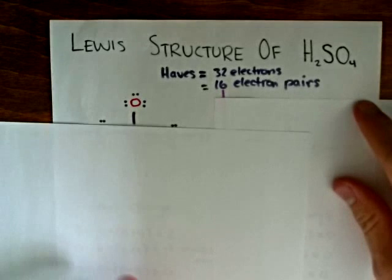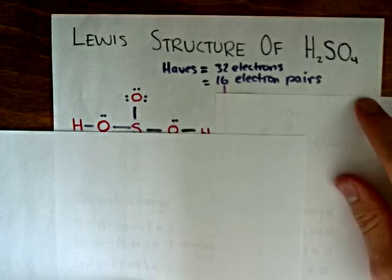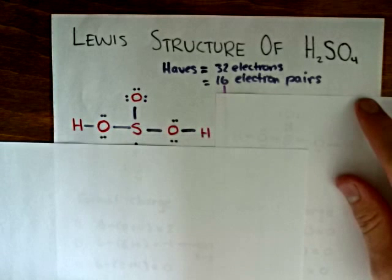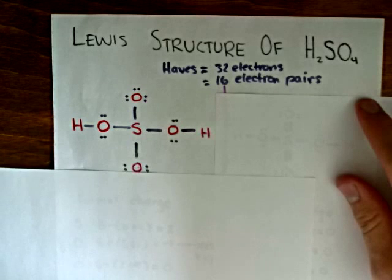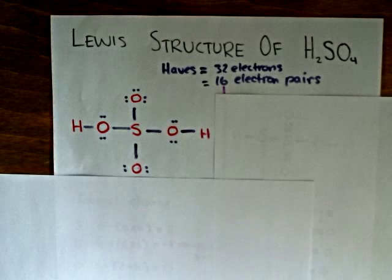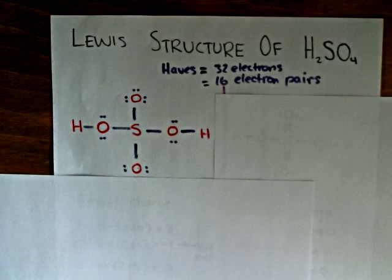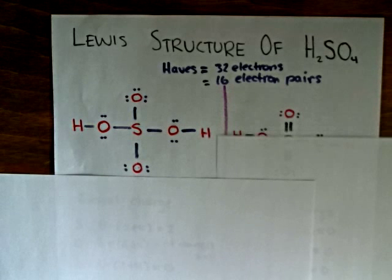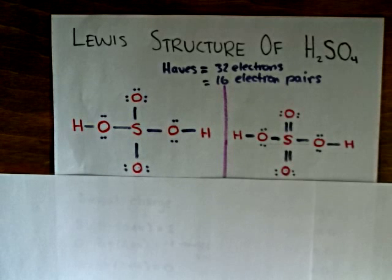And now we can start to draw our Lewis structure. And if you distribute these electrons or electron pairs around, you'll get something that looks like this. Of course, the sulfur will be in the center surrounded by the electronegative oxygens. And this would seem like a valid way to draw sulfuric acid. But it's also possible to draw a structure like this.